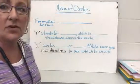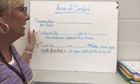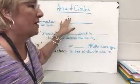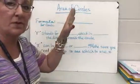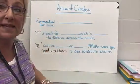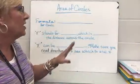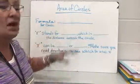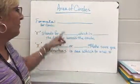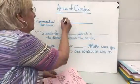We've been talking about circles and we've talked about the circumference around a circle, which is the same thing as the perimeter around any other figure. Today we're going to be talking about area of circles and the formula we're going to be using.